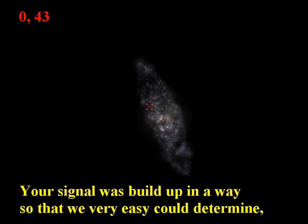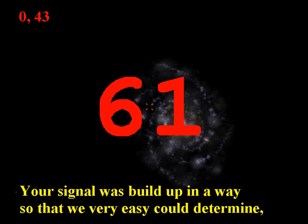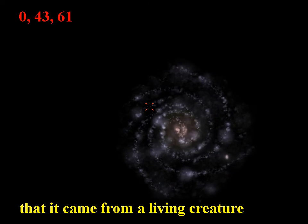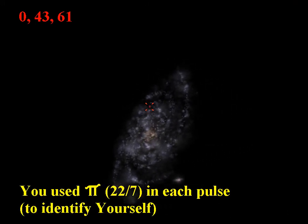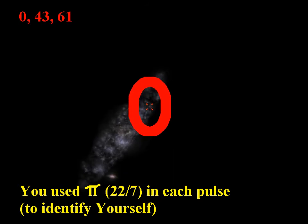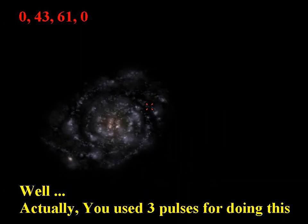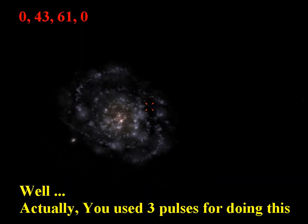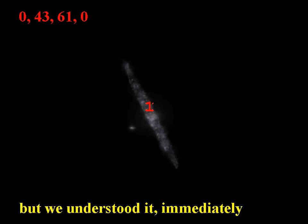Your signal was built up in a way so we very easily could determine that it came from a living creature. You used pi in each pulse to identify yourself. Well, actually, you used three pulses for doing this, but we understood it immediately.